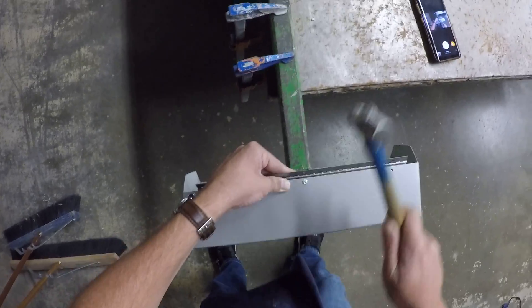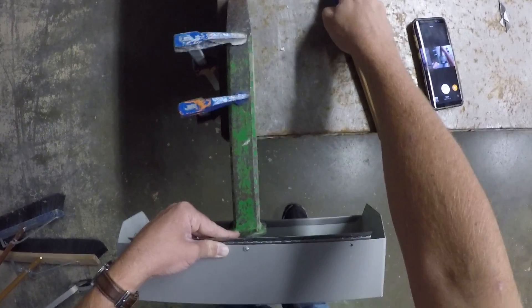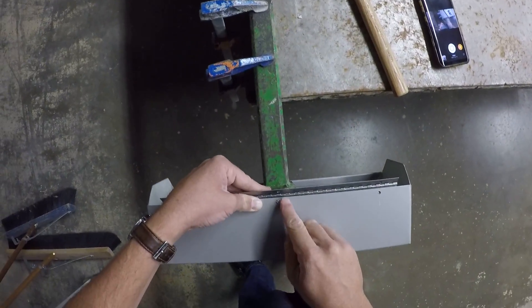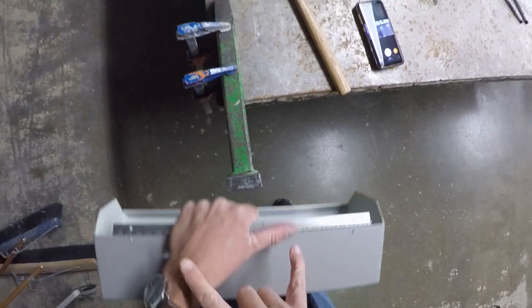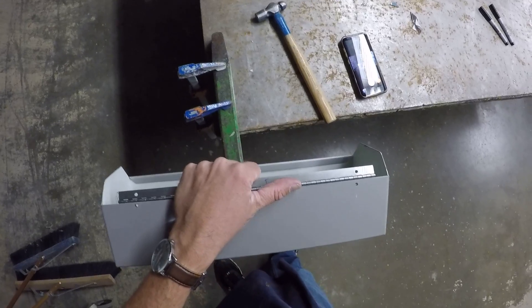Slowly work your way around with the ball peen end of that hammer. Make yourself a nice head. And then you can line up your other two and rivet those in place.